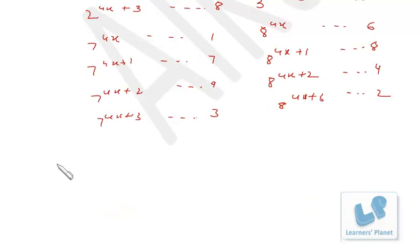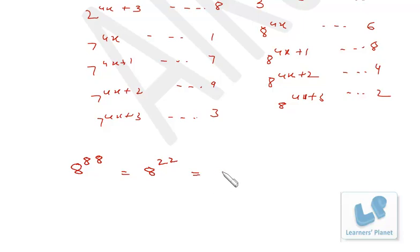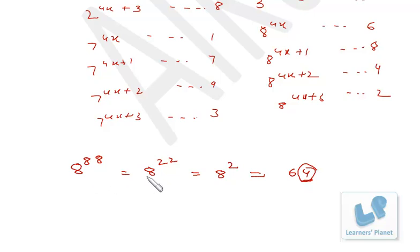Now let me explain the confusion in your mind. What you are doing is: 8 raised to 88 equals 8 raised to 22 — by dividing 88 by 4 — and then dividing 22 by 4 to get 8 raised to 2, and finding the unit digit of 8 squared as 4. The very first mistake is that 8 raised to 88 is not equal to 8 raised to 22, and that is not equal to 8 squared. That is wrong.